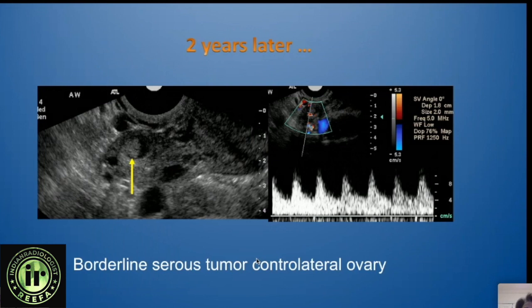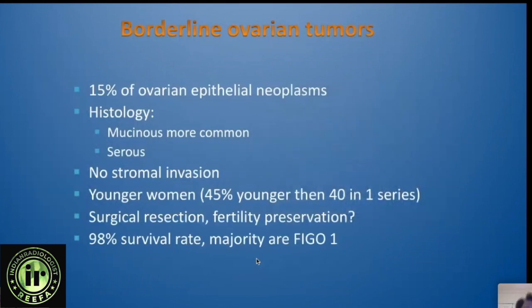Borderline tumors represent about 15 percent of ovarian epithelial neoplasms. They tend to be mucinous but can be serous, with no stromal invasion, and they usually affect younger women. We must think about fertility preservation and consider less aggressive surgery, as the vast majority are low-grade with excellent survival rates.